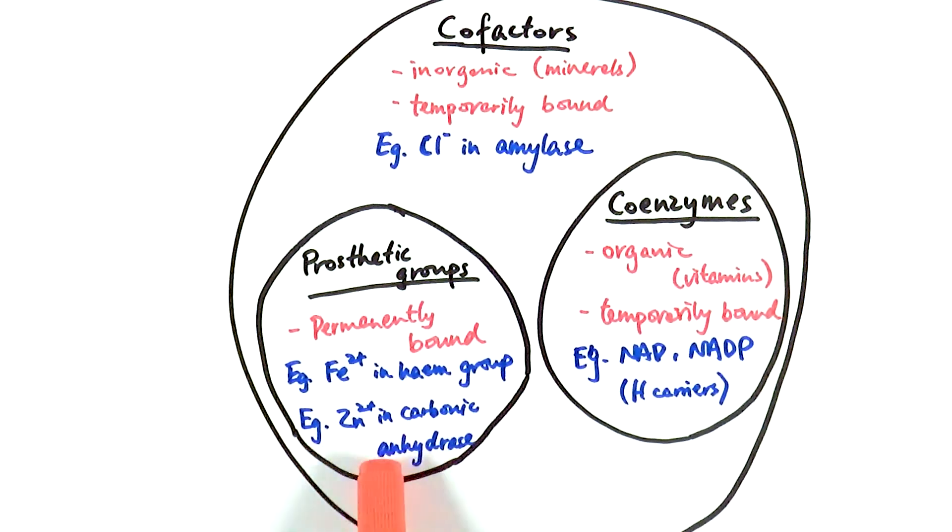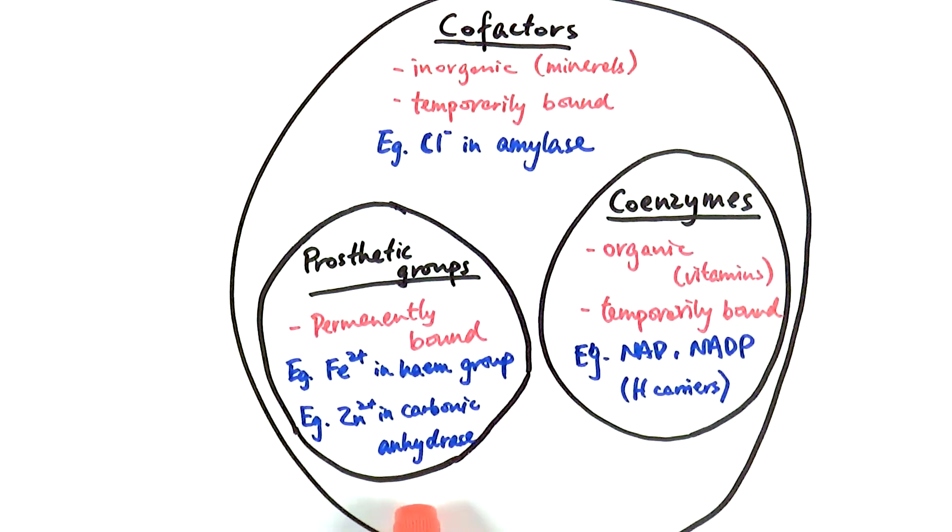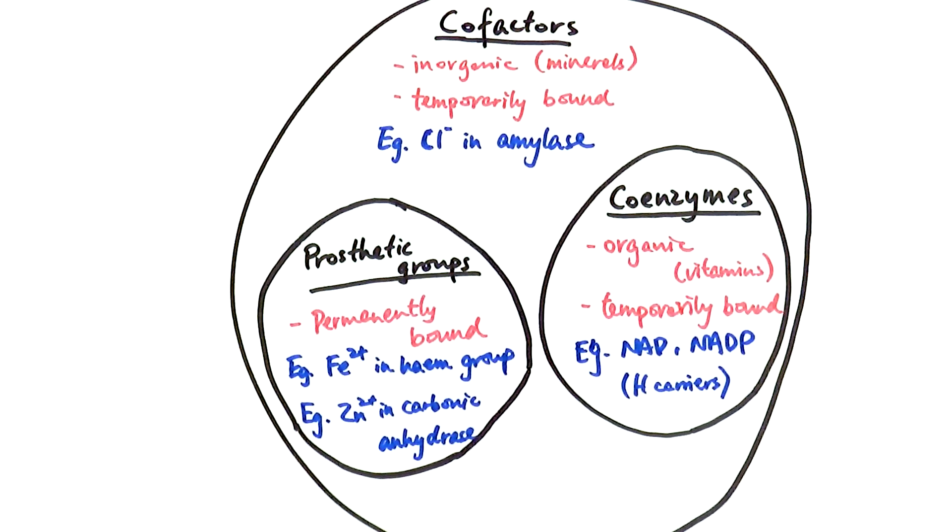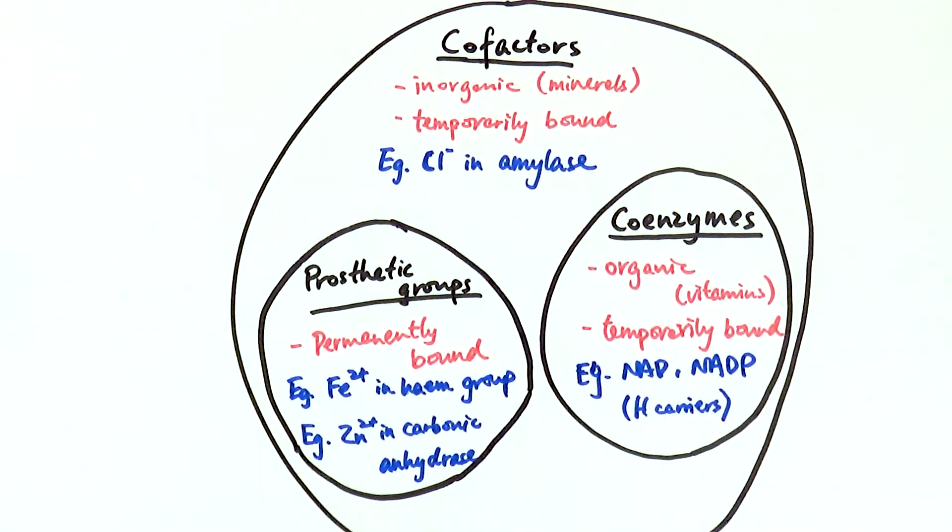Or the zinc 2+ ions, which are found in carbonic anhydrase, which is found inside the red blood cells responsible for the carbon dioxide transport. Actually these two are both found in the red blood cell, and they both have a really key role in playing the transport of these two gases around the body. And this is everything you need to know about cofactors.